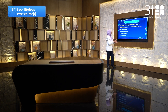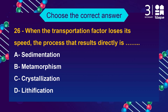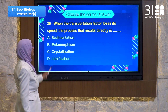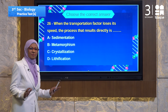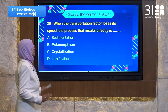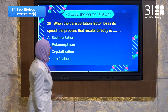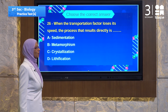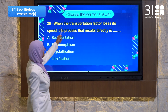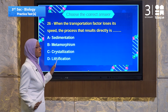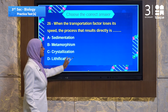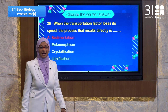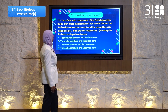Question 26 is about earth science. When a transportation factor loses its speed, it must drop its carried material. The process that results directly from this is: sedimentation, metamorphosis, crystallization, or lessification. When they lose their speed, they will drop what they carried. So the answer must be sedimentation. That's the answer.